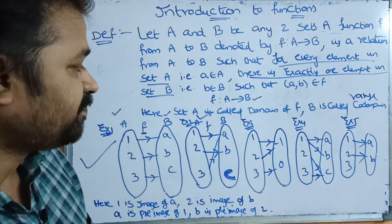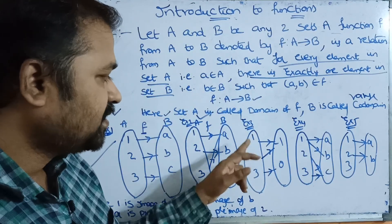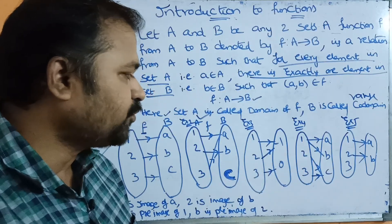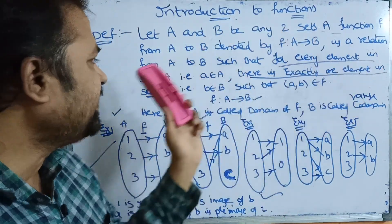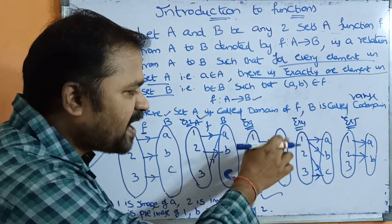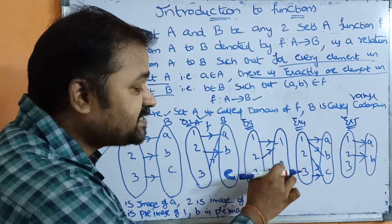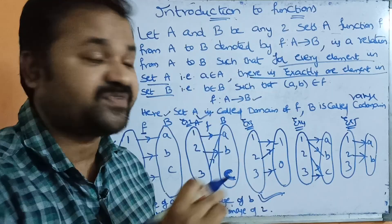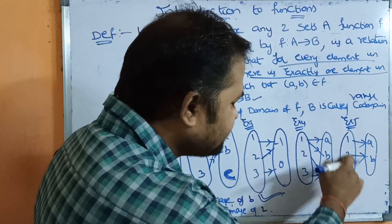In Example 3, set A = {1, 2, 3} and set B = {-1, 0}. Here, 1 maps to -1, 2 maps to -1, and 3 maps to 0. Since every element in set A maps to exactly one element in set B, this is also a function — even though multiple elements of A map to the same element in B.